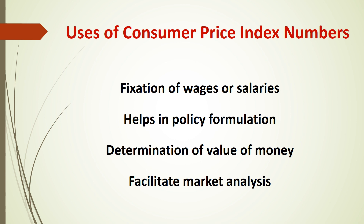The purchasing power of money is calculated as 1 divided by the cost of living index number, and real wages equals money wages divided by the cost of living index, multiplied by 100. Additionally, the cost of living index numbers facilitate the analysis of the markets of particular goods and services.